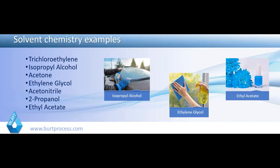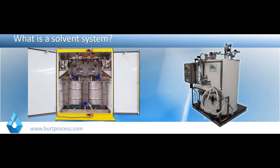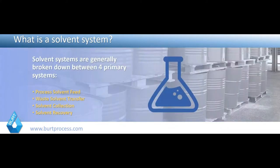Some will be Class 1 Div 2, some will be Class 1 Div 1, depending on the application — EH&S and insurance will also weigh in. Solvent systems are broken down into four primary categories: process solvent feed systems, waste solvent transfer systems, solvent collection, and solvent recovery systems. We're going to look at each one individually and delve into the nuances that make them safe, practical, and less expensive to operate.